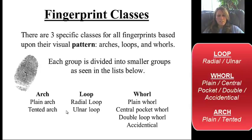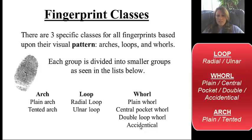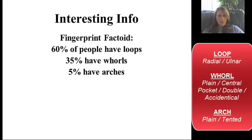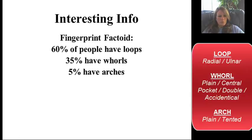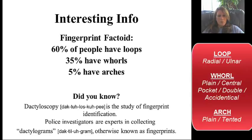For arch, you can have plain or tented. For loop, radial and ulnar — so if you've had anatomy, that looks familiar. For the whorl, there are three main: plain, central pocket, and double loop. Then the accidental — anything that really doesn't fit into any other categories is dropped into the accidental. Always start with the loops because that's the highest percentage of the population. Arches are only about 5%, so if you think it's an arch, you may want to look more carefully to make sure it's not actually a loop.